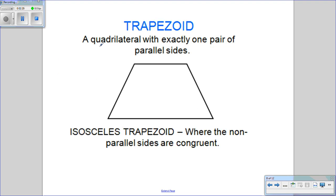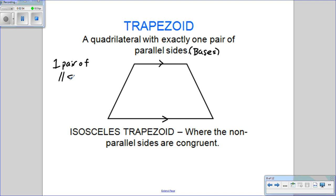Next, we have a trapezoid. A trapezoid is a quadrilateral with exactly one pair of parallel sides. These two sides are our parallel sides — those are called the bases. The other two sides are not parallel, so one pair of parallel sides.